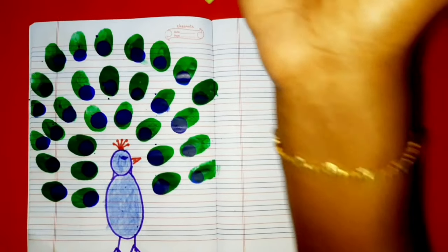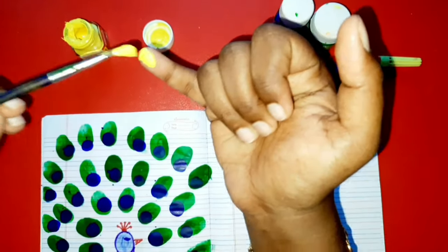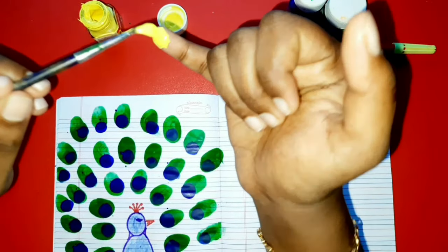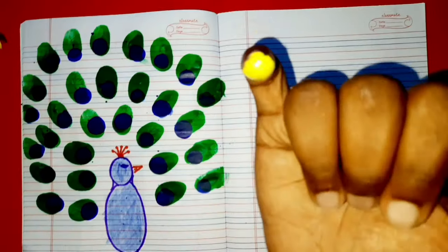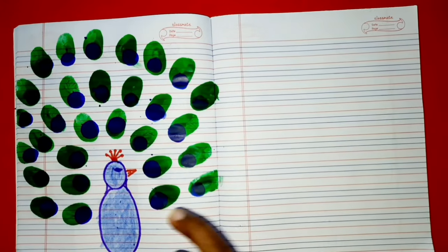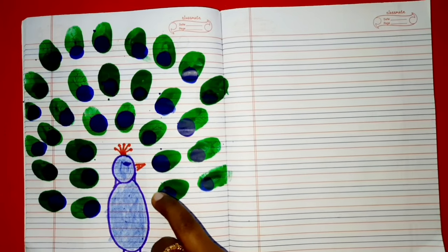Okay, it is dry. Now take your yellow color and apply on your tiny finger. Okay, and now let's put a yellow dot inside all these dots. Okay, smaller.